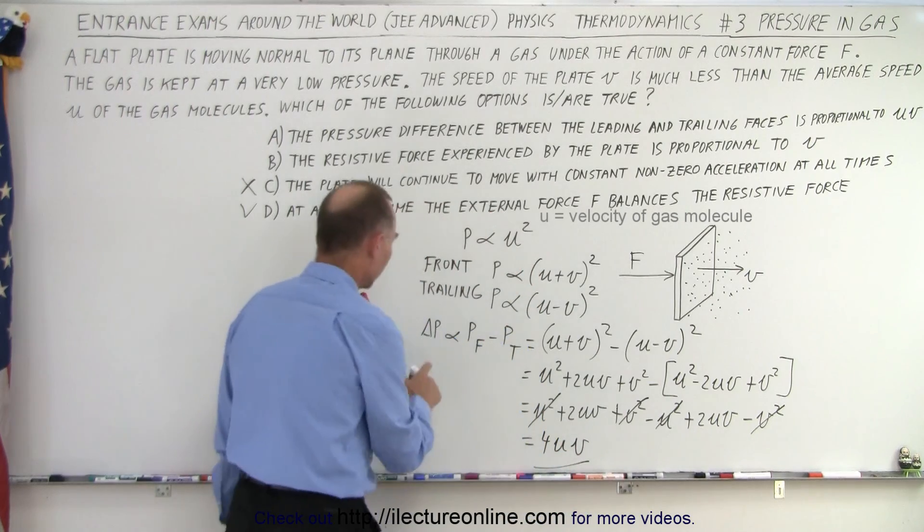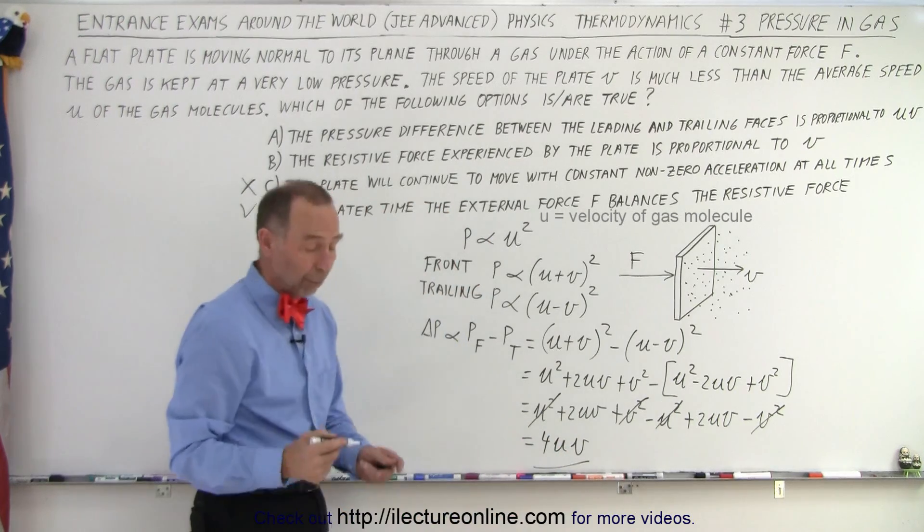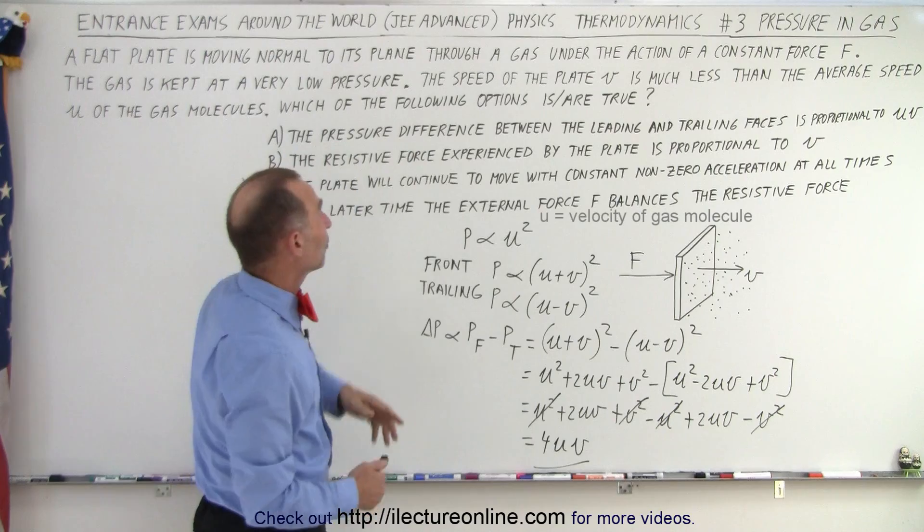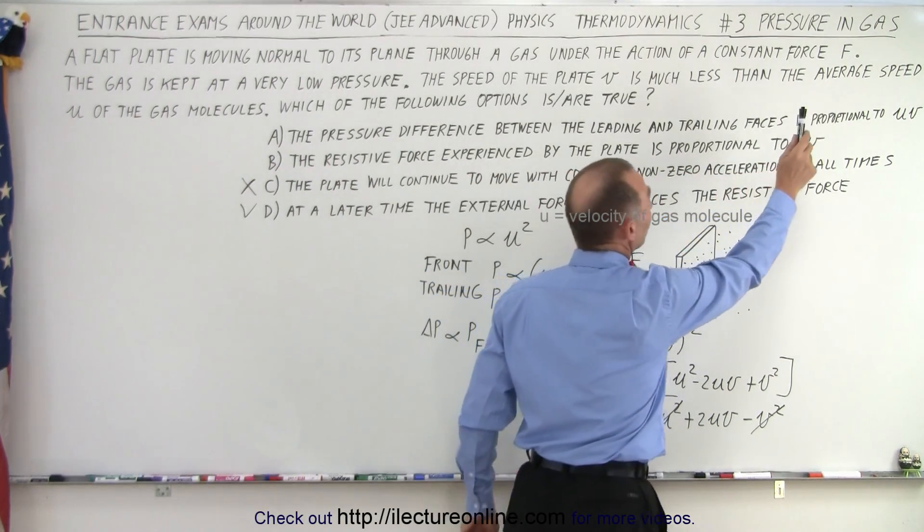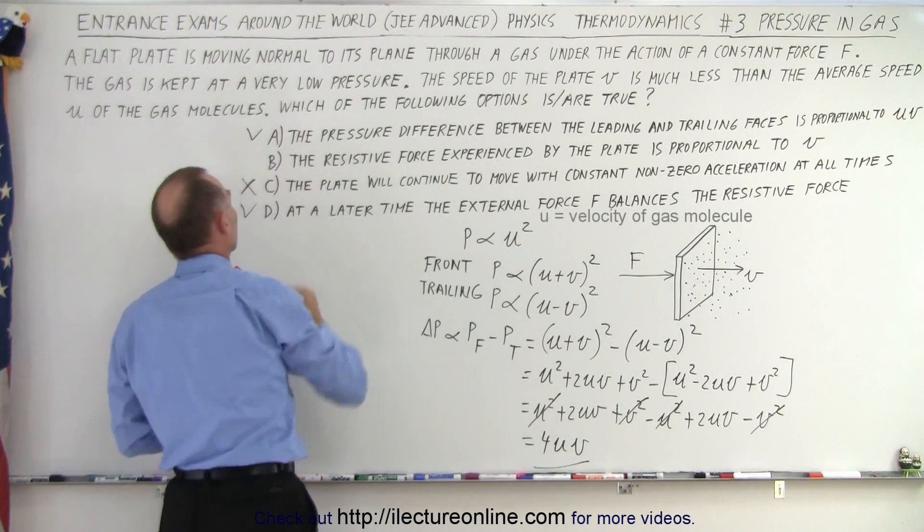Notice the pressure difference is proportional to 4 times the product U times V. Which means that if we take a look at A, the pressure difference between the leading and trailing phases is proportional to UV, and that is indeed the case. So therefore A is correct as well.